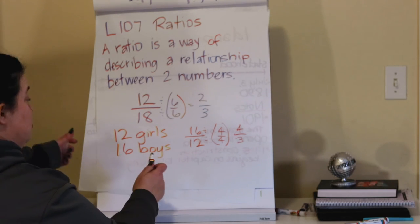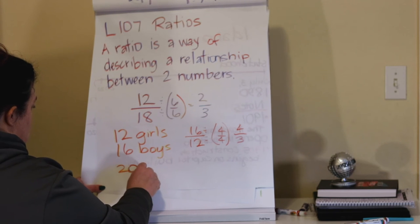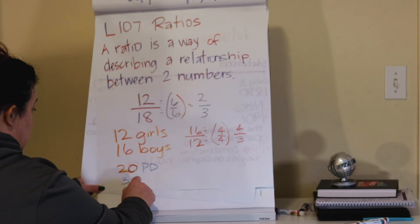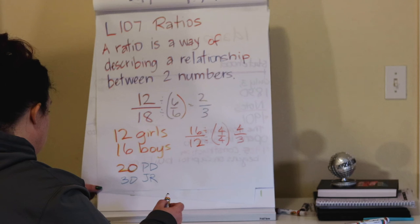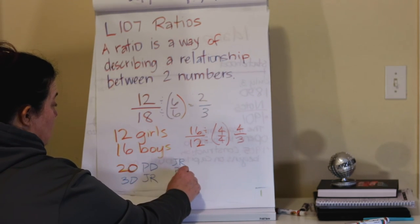We have 20 prairie dogs. I'm just calling them PD right now. And we had 30 jackrabbits. Okay, and they want to know what the ratio of jackrabbits to prairie dogs are.